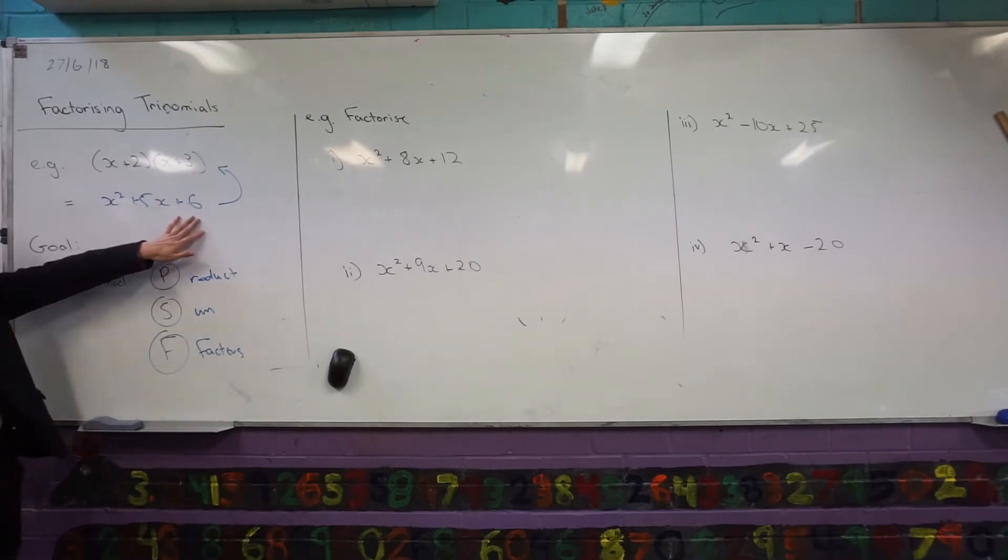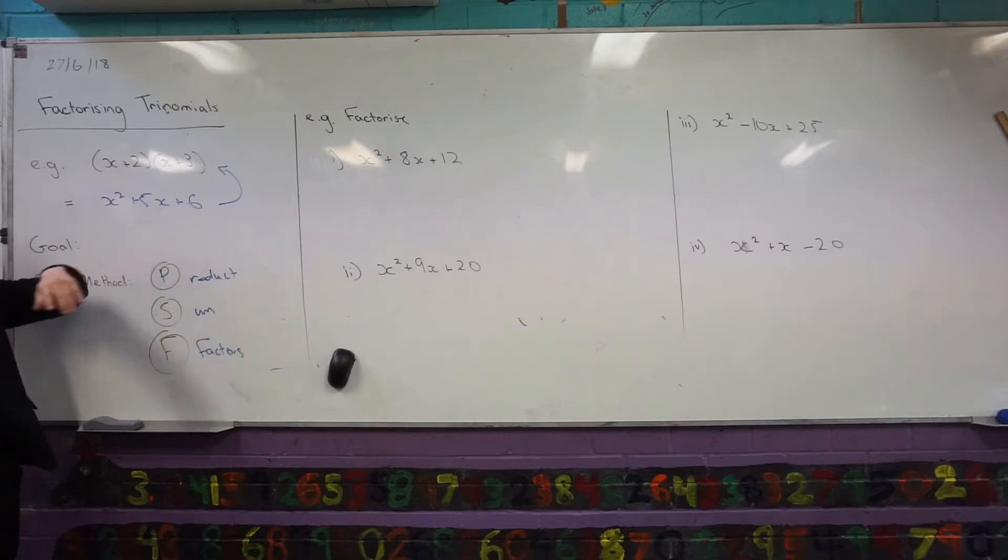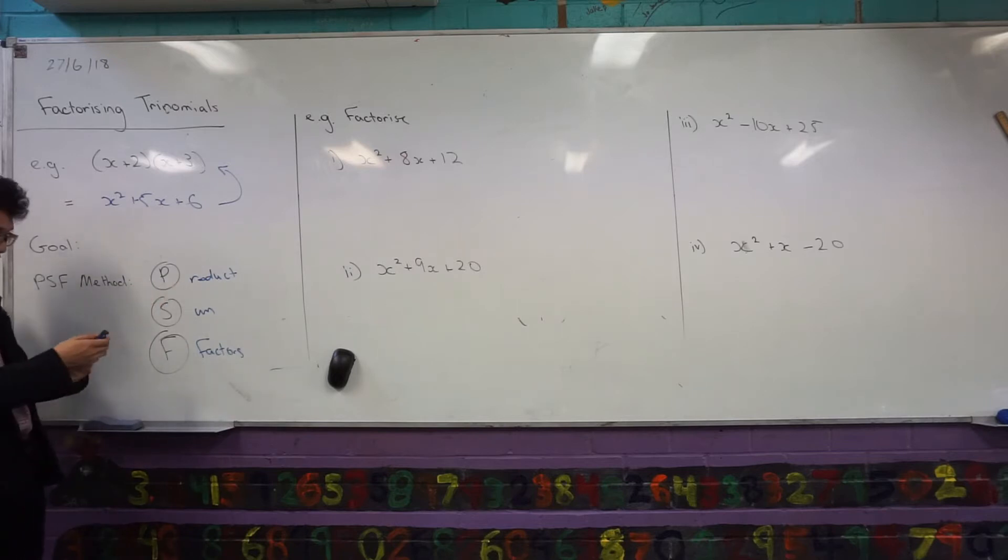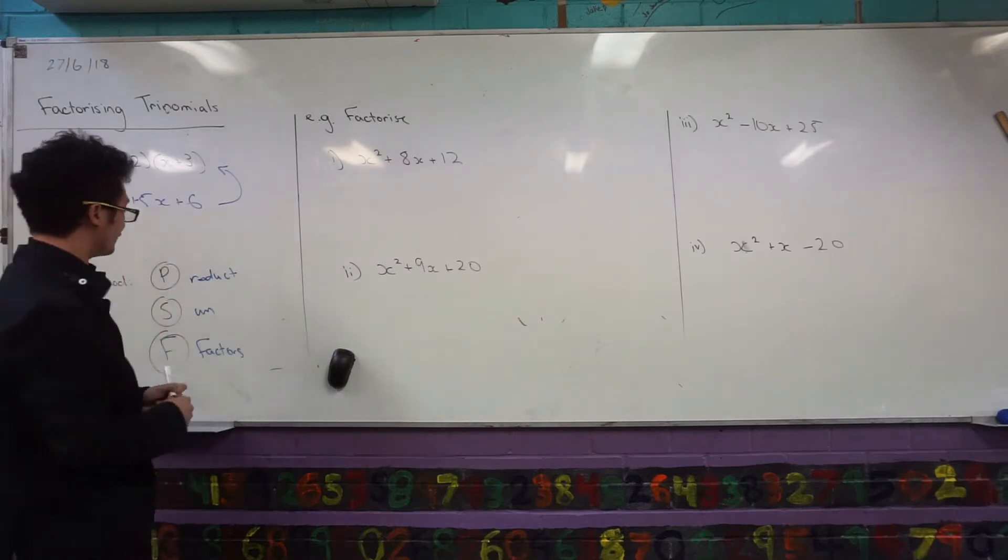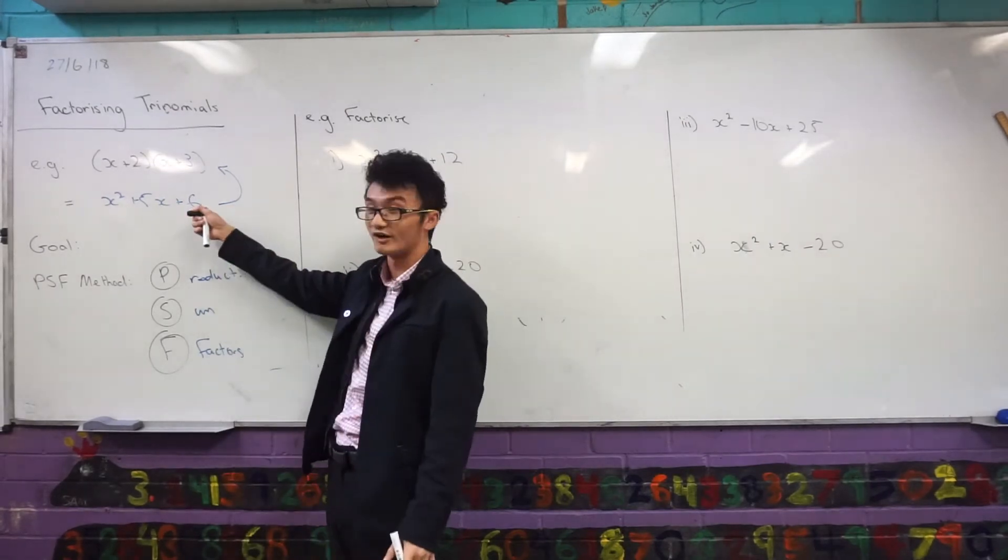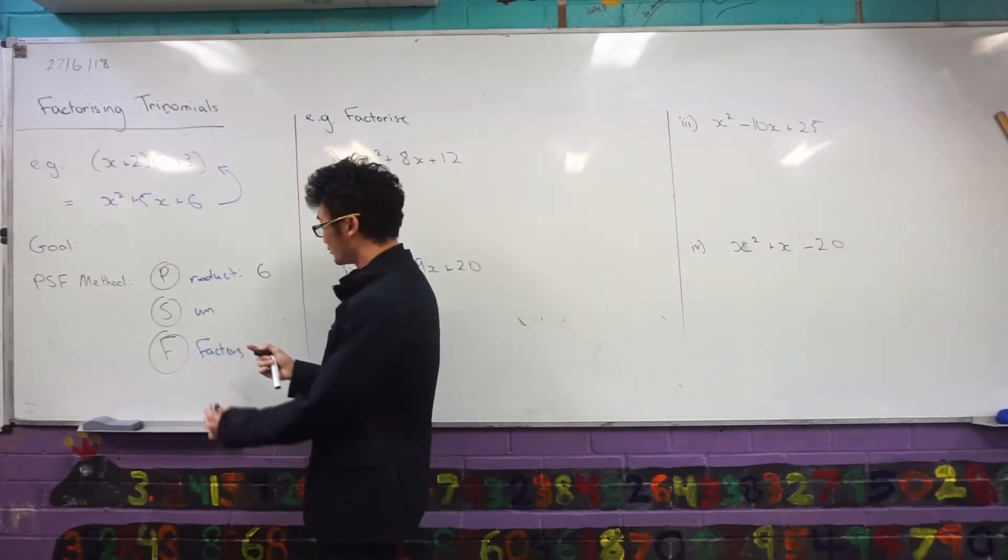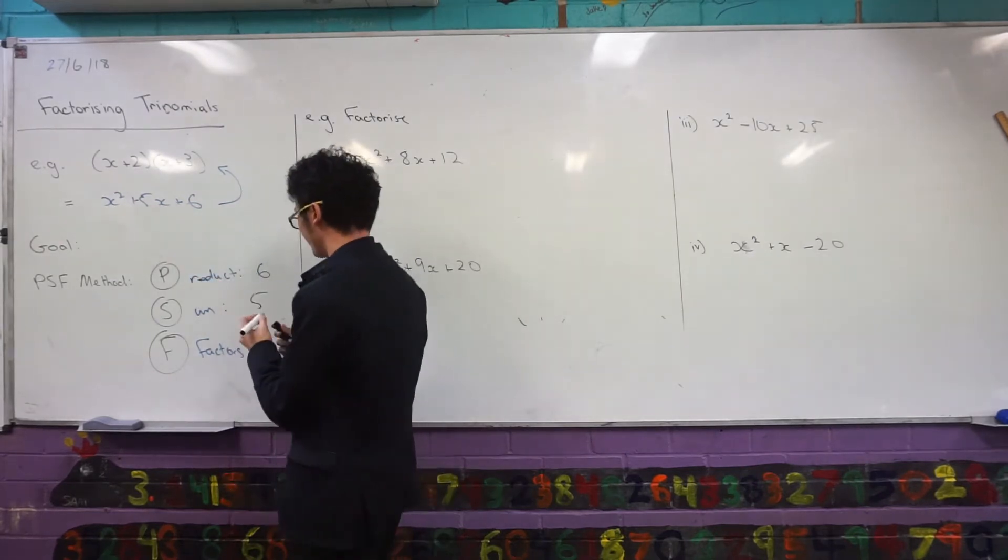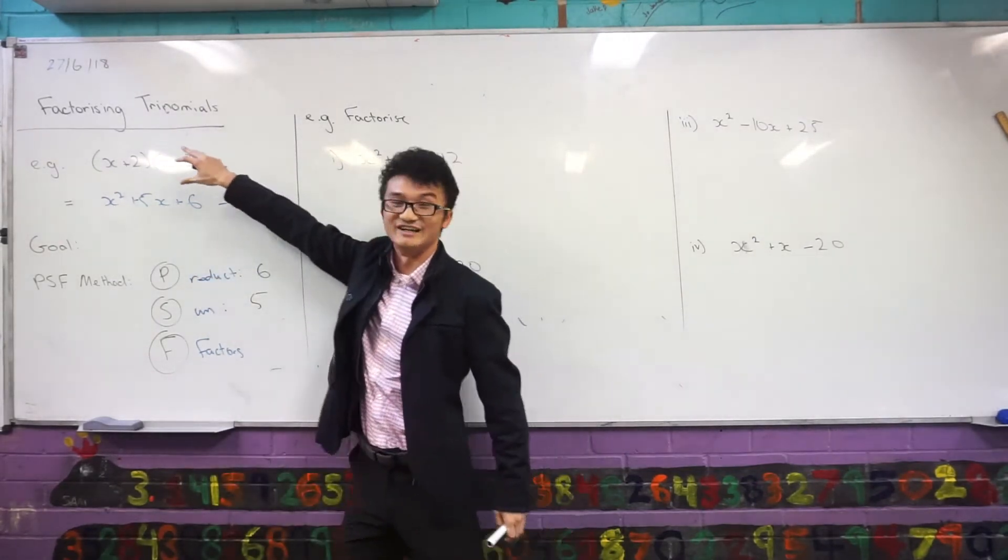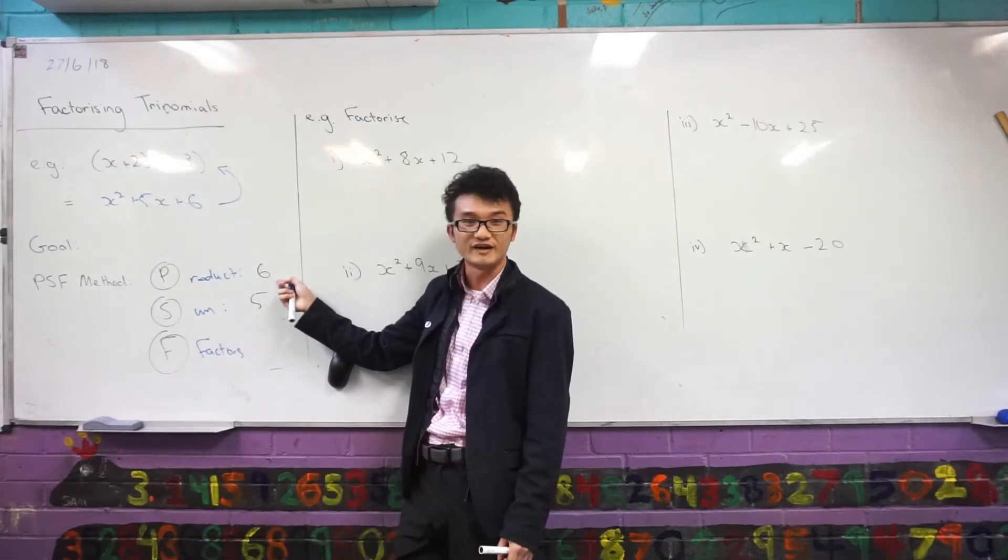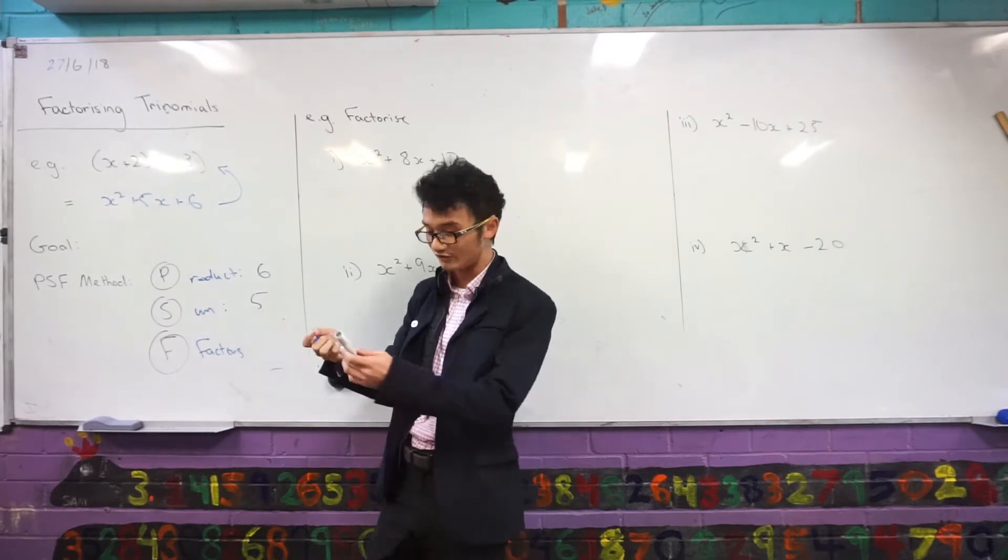Let's just use this one as an example. I already know how this is going to factorize, but the way I go about it is I think about what is the product of the last term here. Well, in this case, I want the product of two numbers, where the product is six, and I want two numbers where the sum is that middle term, which is five. Now, pretend I didn't know what the factorization was already. One thing you might do is you might go through all the factors of six, and just check through.